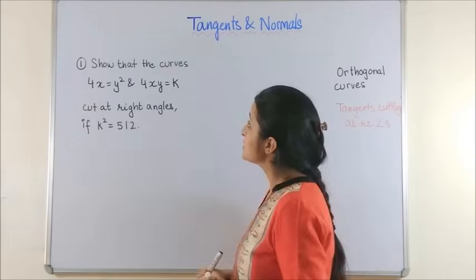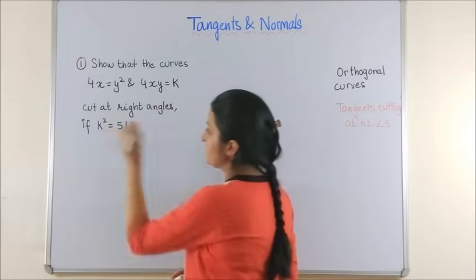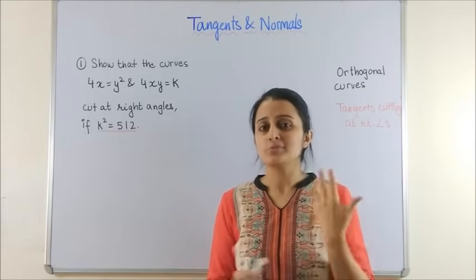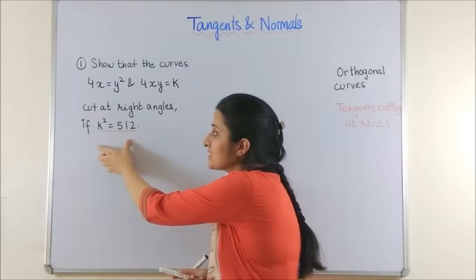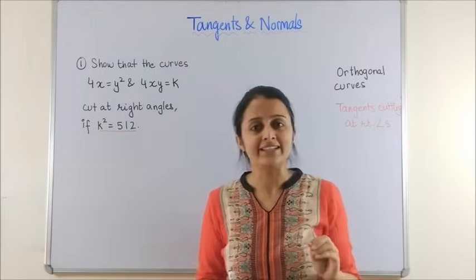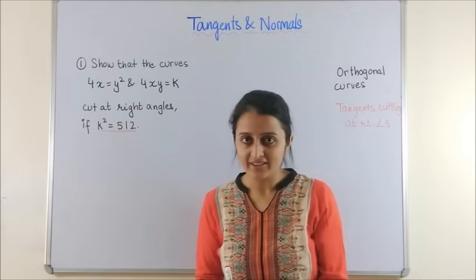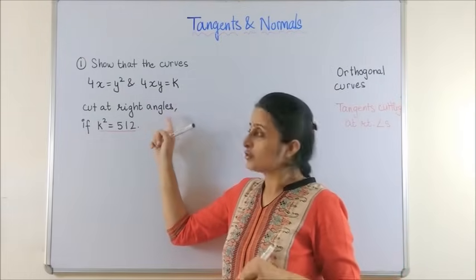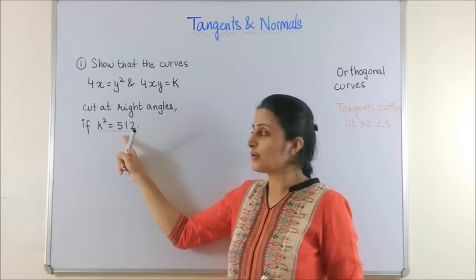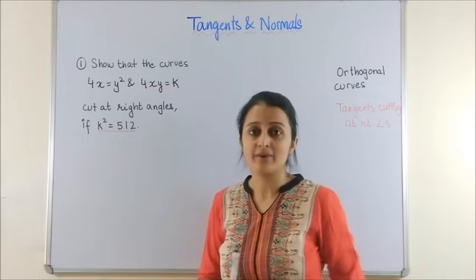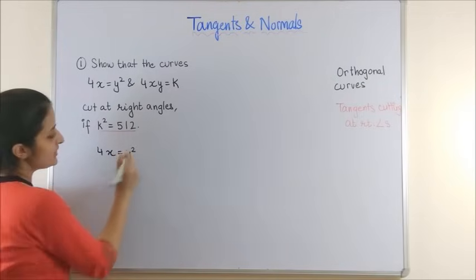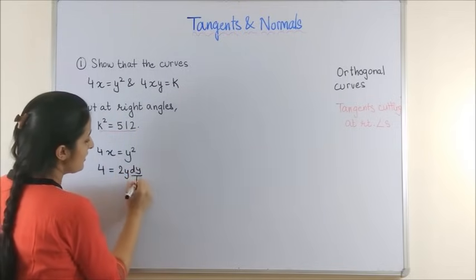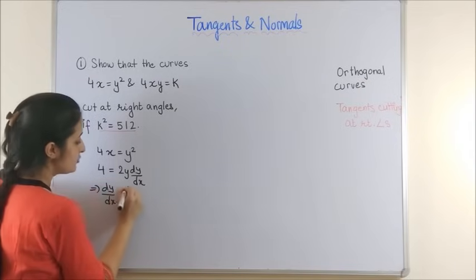Look at the question. It says show that these two curves cut at right angles if k² = 512. The language of the question is slightly ambiguous — most students use this condition and prove that tangents are at 90 degrees. However, it is to be done the other way around: we will get the tangents to the curve, use that they are already orthogonal, and in the process prove that k² = 512. Taking the first curve and differentiating with respect to x, we get 4 = 2y · (dy/dx), which gives dy/dx = 2/y.